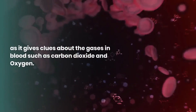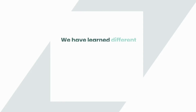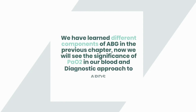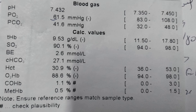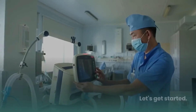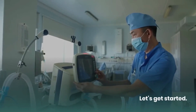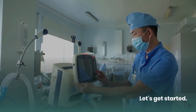We have learned different components of ABG in the previous chapter. Now we will see the significance of partial pressure of oxygen, or PaO2, in our blood and the diagnostic approach to ARDS. So let's get started.